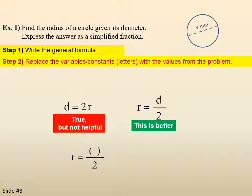Step 2, replace the variable slash constant, those are the letters, with the values from the problem. Well, the diameter is given as 9. That goes in for the d. So radius is 9 divided by 2. Now we do the arithmetic using the order of operations, and we get 9 over 2. There's not much to do here.